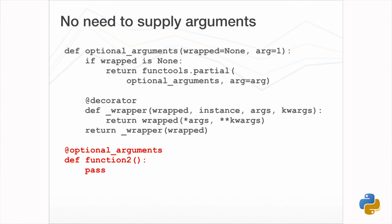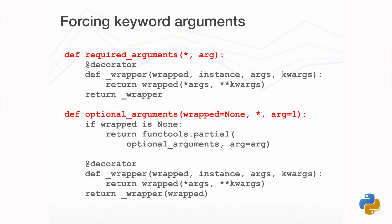Why keyword arguments are preferable is that Python 3 allows you to enforce them using the keyword-only argument syntax. This way you avoid the problem of someone passing a decorator argument as a positional argument by mistake. Keyword-only arguments can also be enforced for required arguments even though it isn't strictly necessary.